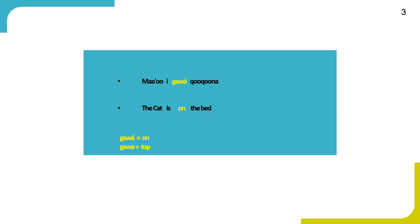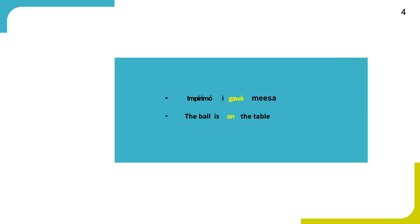Likewise, my second example also uses Gawai as a location noun, which indicates the location of the ball. We can see the ball is on the table. So Gawai here is a location noun that means 'on.'